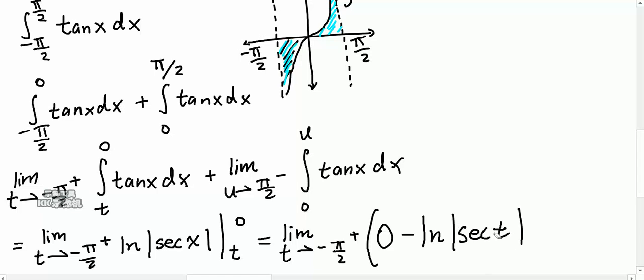Now, secant of t is the same thing as 1 over cosine of t, which is equal to cosine of t to the power of negative 1. Using laws of logarithm or exponents, you can bring this negative down, so you just get the natural log of cosine of t, absolute value. And t is approaching negative pi by 2 on the positive side. So, this right over here, if cosine is approaching negative pi over 2, this right over here is going to be negative infinity.